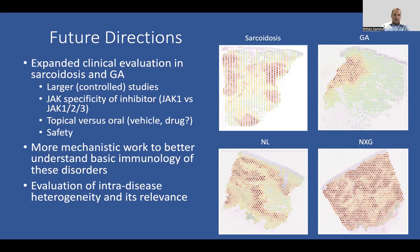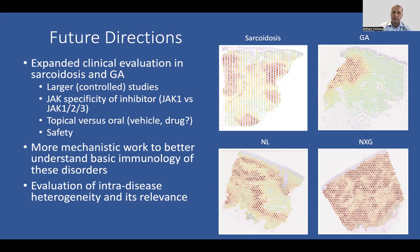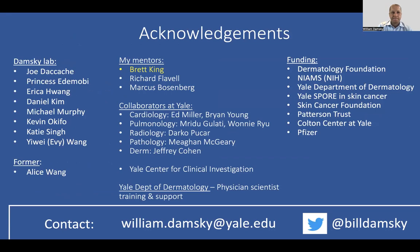The question of how much heterogeneity there is from one patient with GA to another, whether that correlates with differences in clinical presentation, histologic changes, and similarly for sarcoidosis — these are really important areas we're working on. We're very thankful for the support for expanded and ongoing clinical evaluation of JAK inhibition in both disorders. And those are my acknowledgements — I'll wrap up there so we can do Q&A.